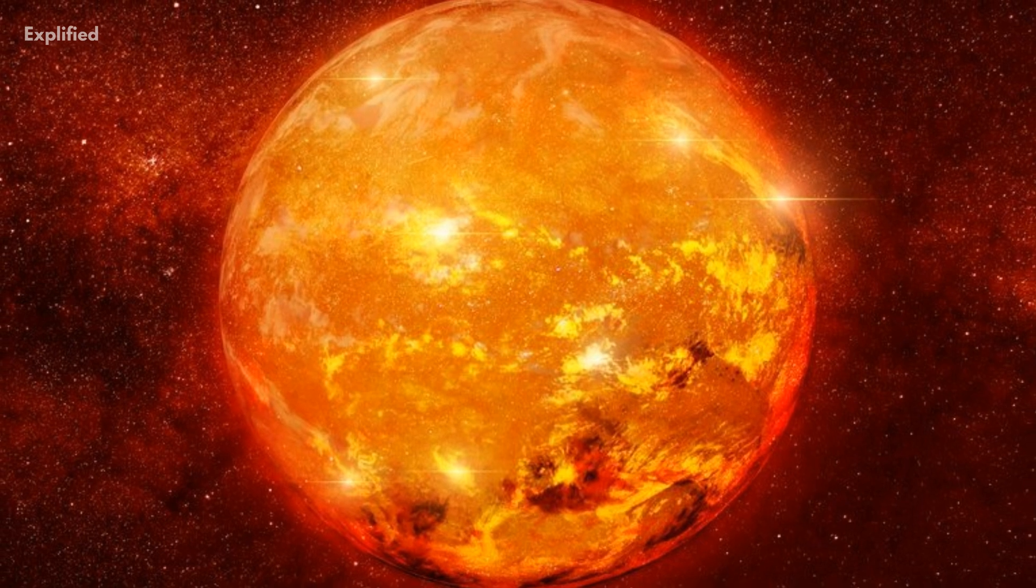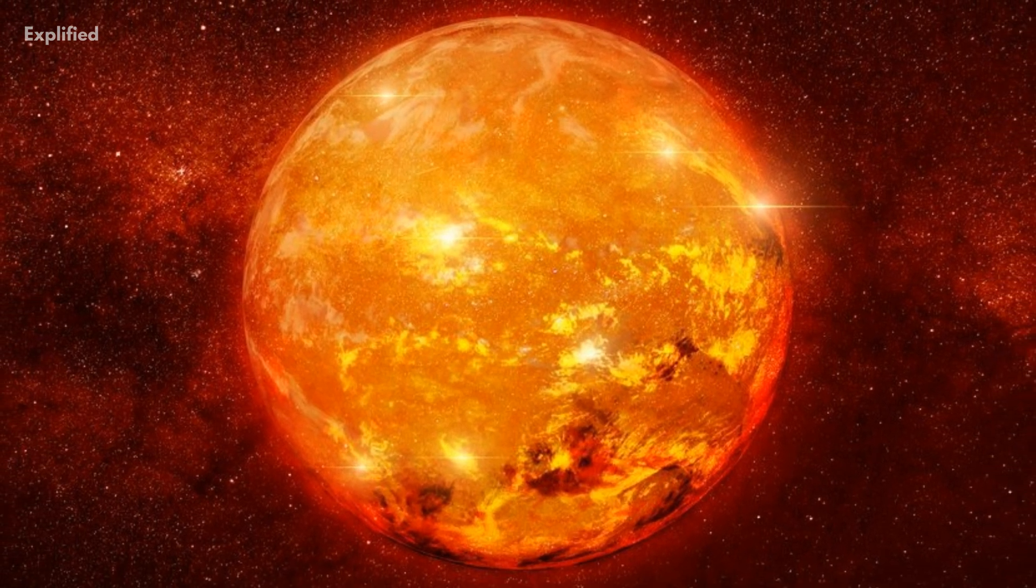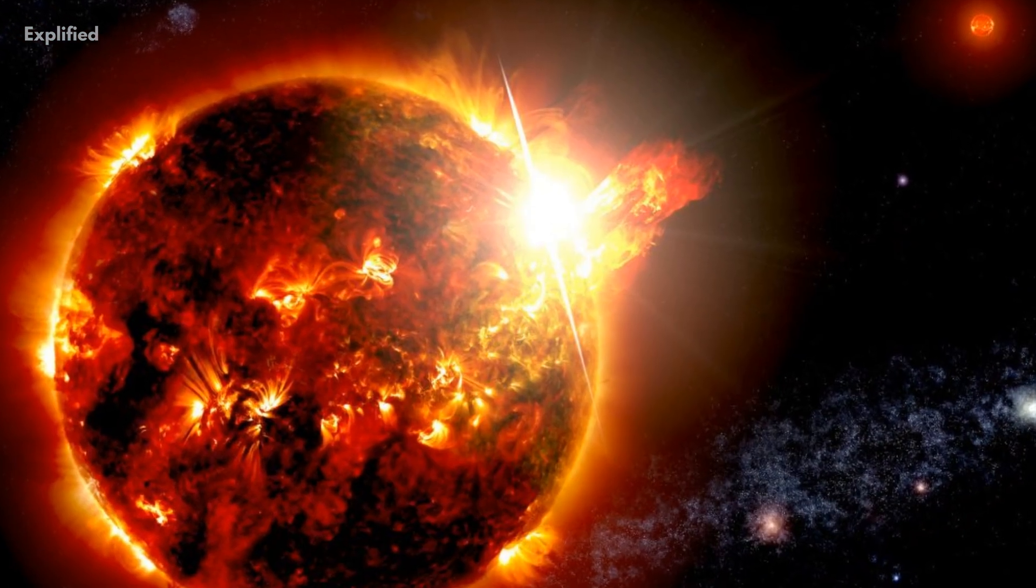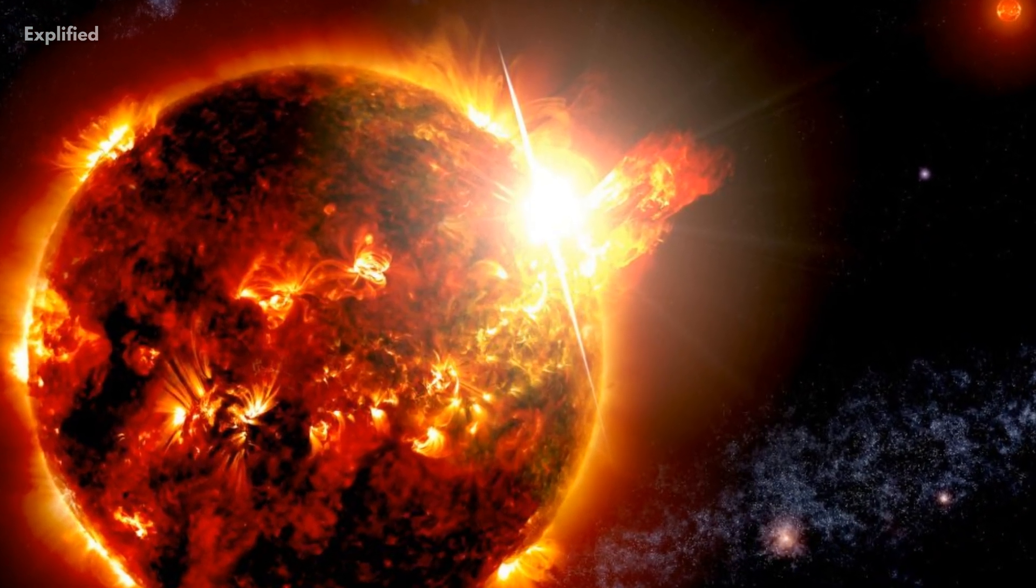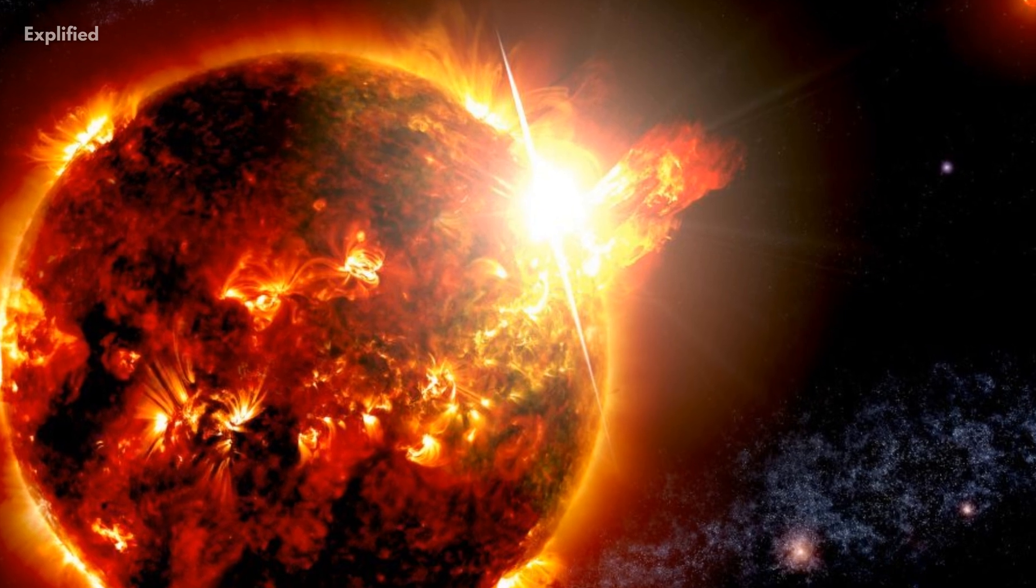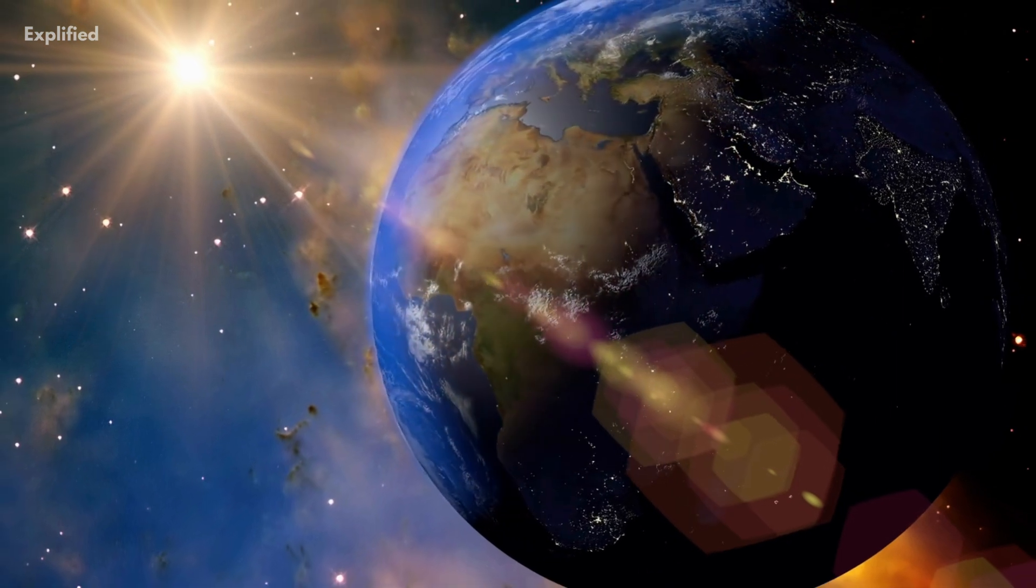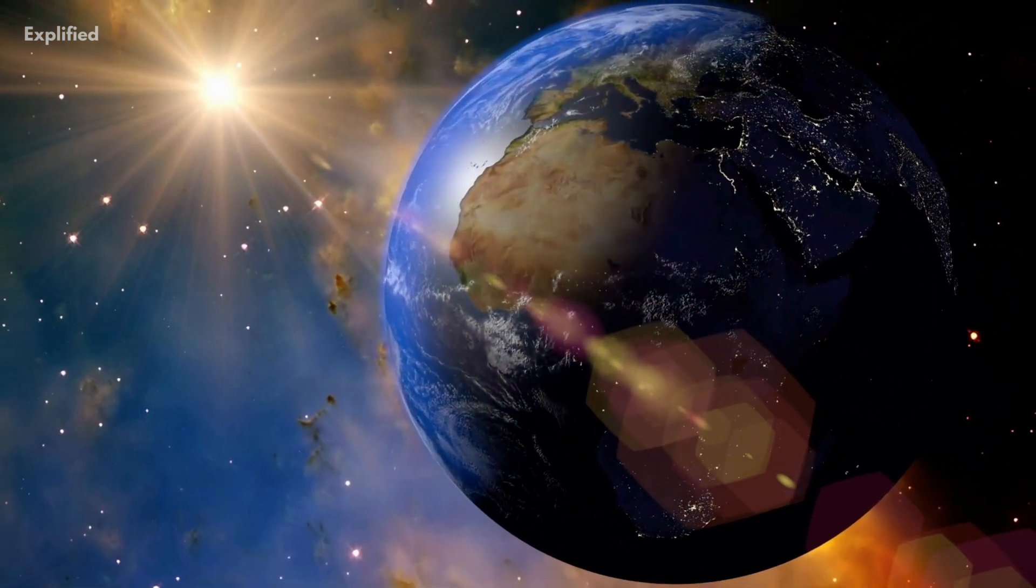Red dwarf stars are stars that usually have only 7% to 50% of the mass of our sun. These stars are one of the most common types of stars and make up more than 70% of all the stars. As a matter of fact, of about 30 nearest stars to us, almost 20 of them are red dwarf stars.